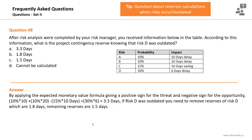For questions about reserve calculations when risks occur or become outdated: when a risk is outdated, remove the whole reserve for that risk from the project's contingency reserves. However, when a risk has occurred, you need to remove the whole impact of that risk, not just the reserve.